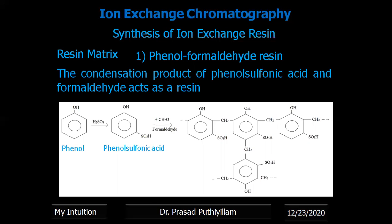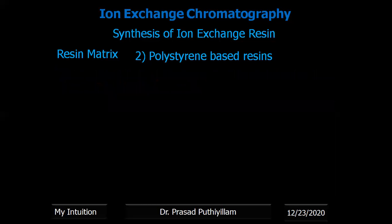The SO3H group is what gives the resin its ion exchange capacity — it dissociates into SO3⁻ and H⁺. Therefore, it can exchange H⁺, replacing it with Na⁺ or other ions, and can detect different ions, making it usable as an ion exchange resin.